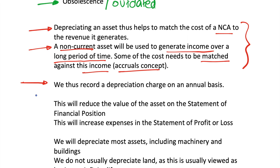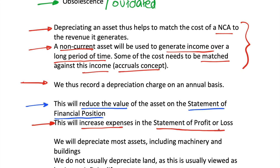Non-current assets are recorded in the statement of financial position. So if we reduce the value of an asset, we reduce its value in the statement of financial position. Because we have double entry bookkeeping in accounting, this depreciation is recorded in two places. The second entry is that we increase our expenses in the statement of profit or loss — so depreciation is treated as a cost or an expense.